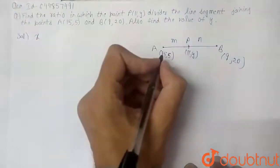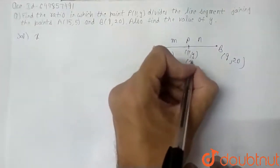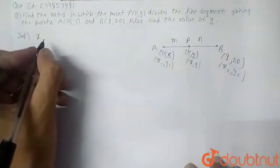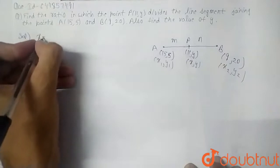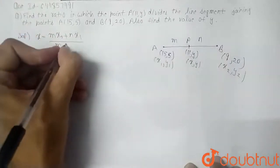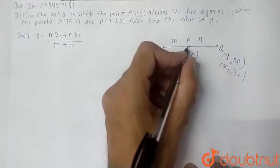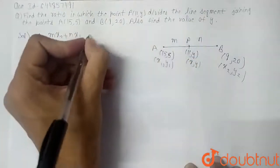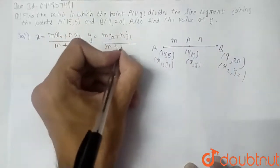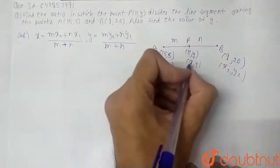Let A be (x1, y1) and B be (x2, y2), and P be (x, y). The section formula gives us: x = (m·x2 + n·x1) / (m + n) for the x-coordinate of P, and similarly y = (m·y2 + n·y1) / (m + n) for the y-coordinate.